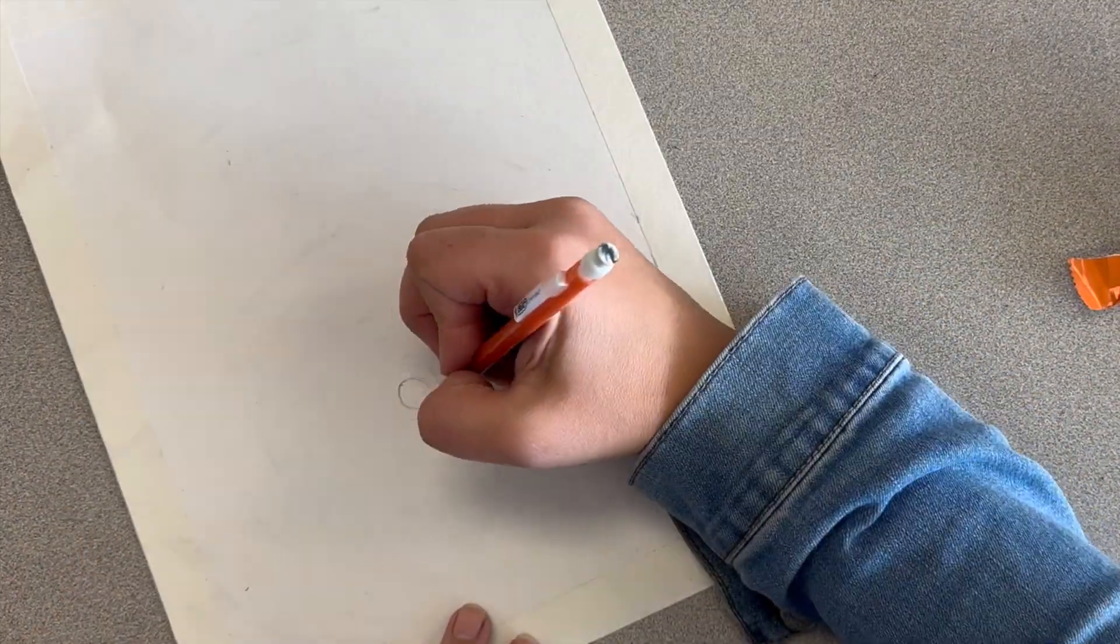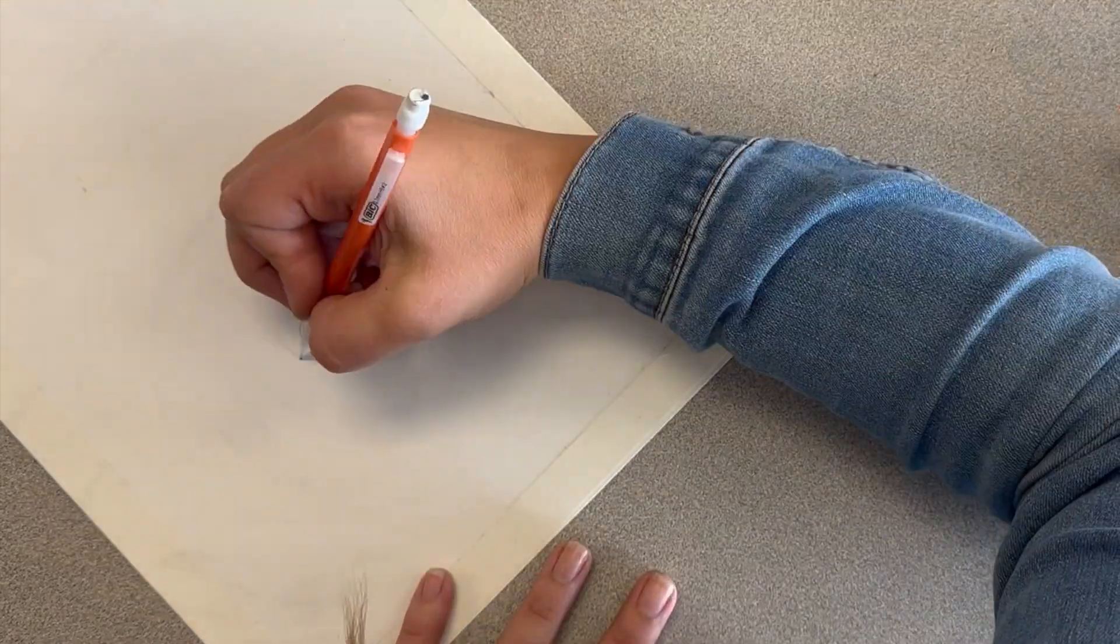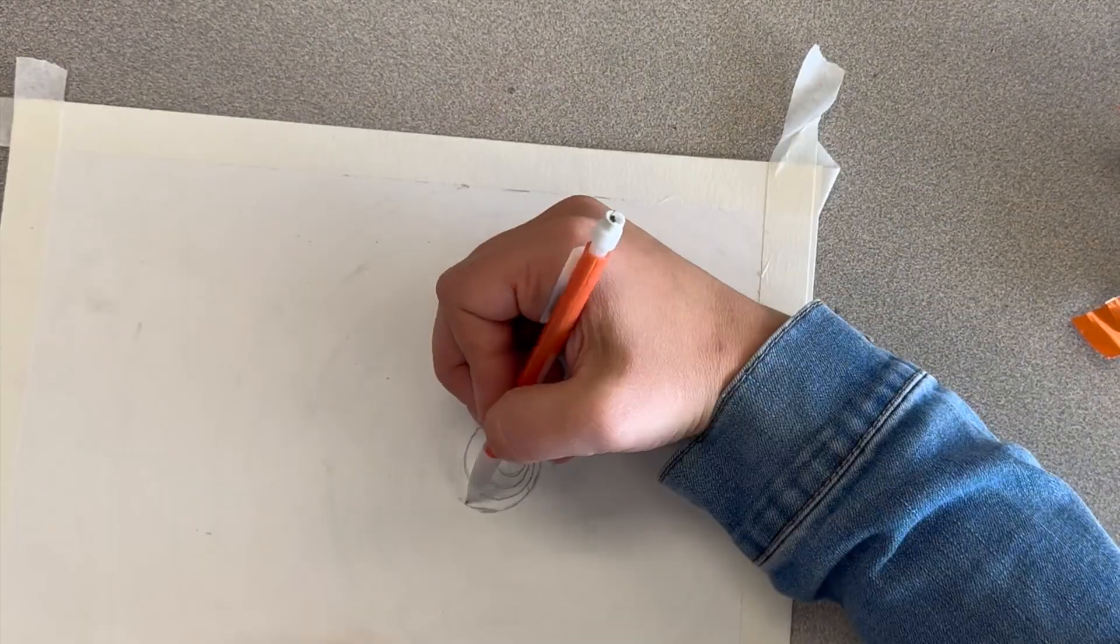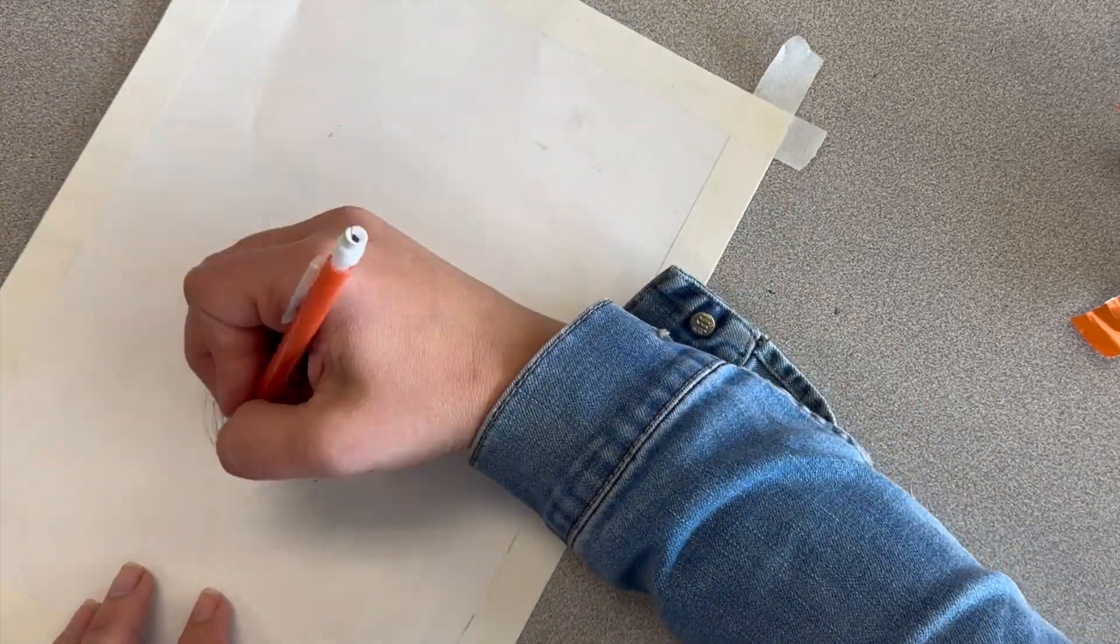Once your masking tape border is finished, you're ready to get started with your circles. You're going to pick a center point on your paper. That could be the center of your paper, or it could be off to the side. Wherever your center point is, you're going to draw one small circle.